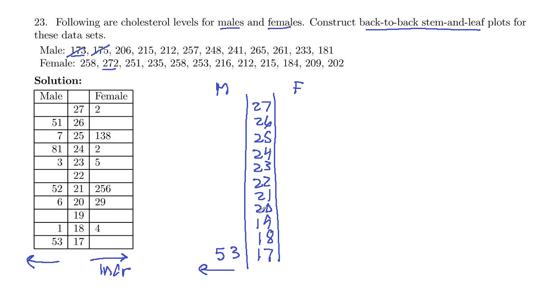206. So that's in the 20s leaf. And we've got a 6 here. And 215. So that's in the 21 stem, excuse me, 20s stem. And then the leaf is the 5 there.